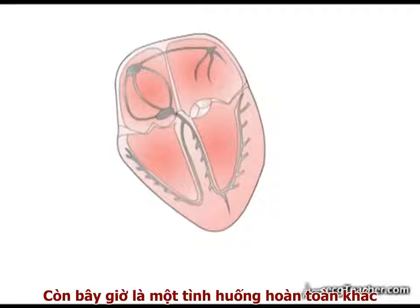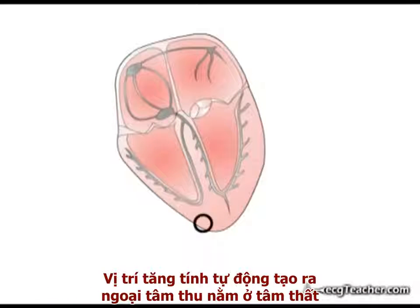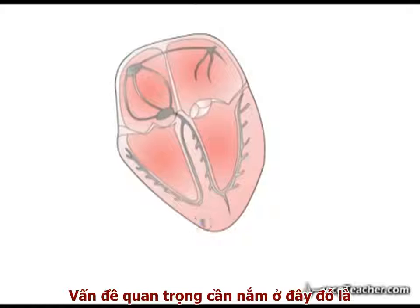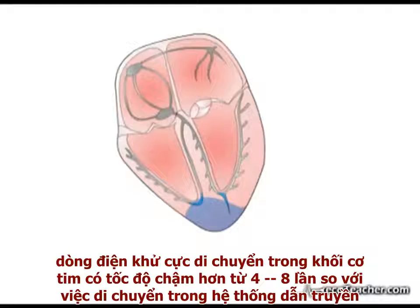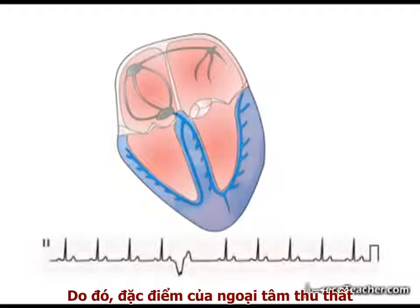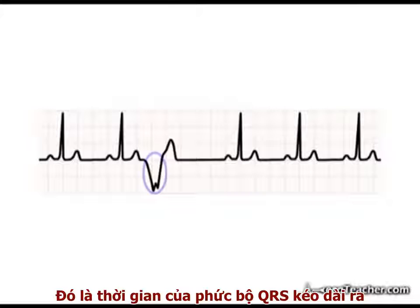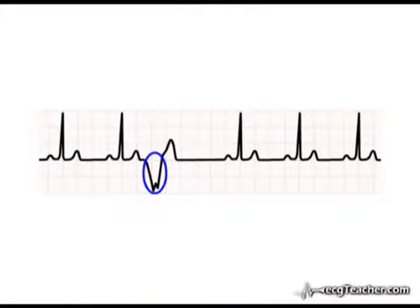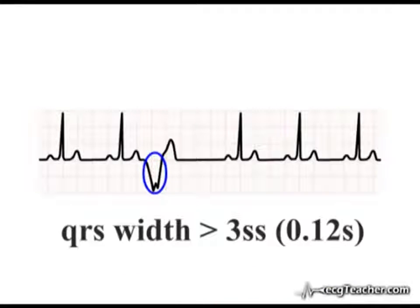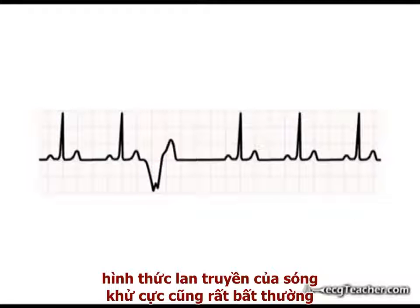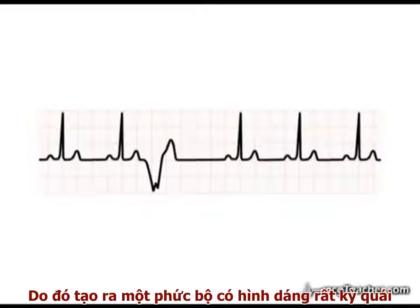Here's a different situation. In this case, the site of increased automaticity generating the ectopic beat is located in the ventricle. The key point to note is that the current is transmitted at least in part outside the ventricular conducting system. Depolarisation moves through myocardium four to eight times more slowly than through conducting tissue. So the characteristic of a ventricular ectopic is that the QRS complex is prolonged in duration, resulting in a broad QRS complex greater than three small squares on the ECG readout. Note also that the pattern of spread of depolarisation is highly abnormal, producing a complex of bizarre shape.